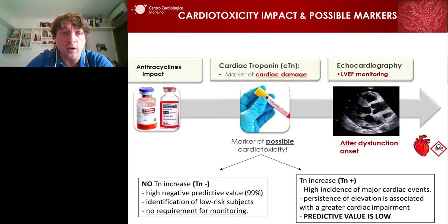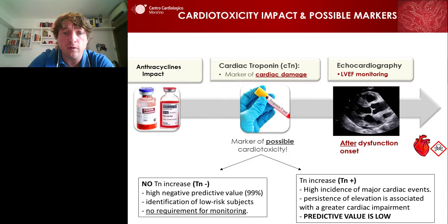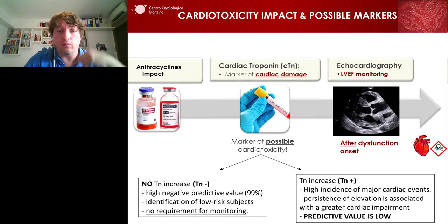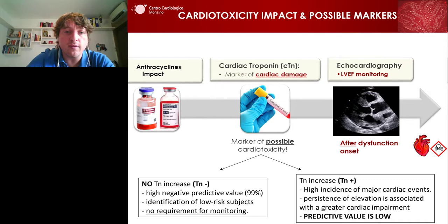There are some markers that are used, which are not optimal. The best one is cardiac troponin, a protein present in the heart. When there is cardiac damage, troponin is released into the blood. So if subjects treated with anthracyclines have no increase of troponin, we know they are okay — they do not require cardiac monitoring and have a low risk of problems. The problem is when there is a positive increase of troponin; we know these subjects are at risk of cardiotoxicity. But the predictive value is low, as we do not know when and how much there will be an impact on their cardiac function.